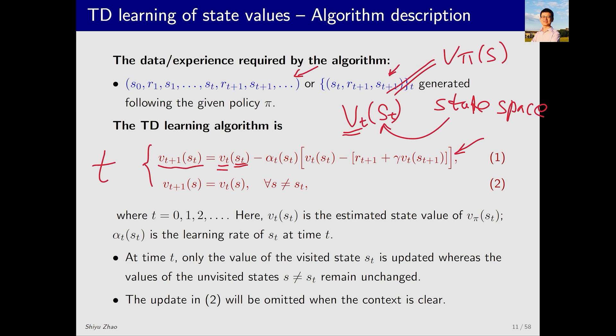How do we update it? We update V_t by subtracting this long term, which I will explain in detail later. Now let's look at the second equation. The second equation states that at time t, I visited state s_t. Therefore, all other states were not visited and their V remains unchanged. So, V_{t+1} equals V_t. This is the TD algorithm.